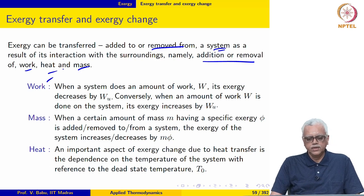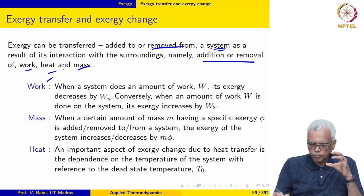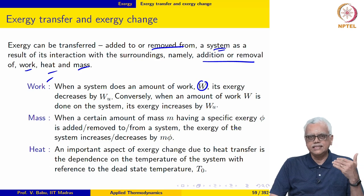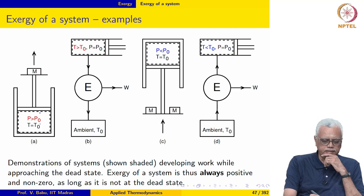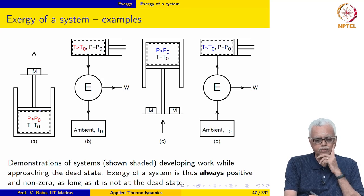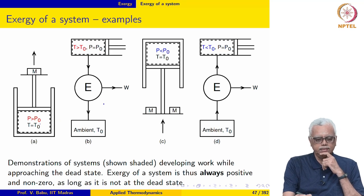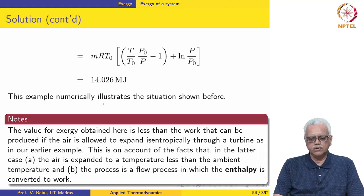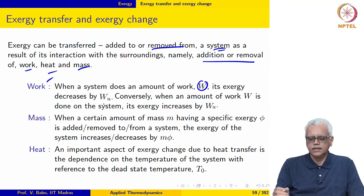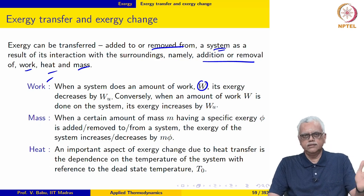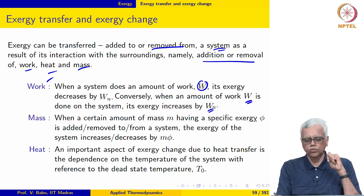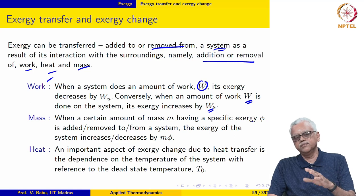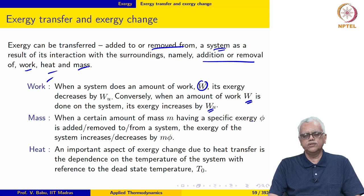Let us first look at work interaction. When a certain amount of work W is done by the system, its exergy decreases by W. As the system does work — for example by raising a mass during an expansion process — its exergy decreases by exactly that same amount. Conversely, when an amount of work W is done on the system, its exergy increases by the same amount W, since exergy is work and work transfer can be directly converted to exergy change.